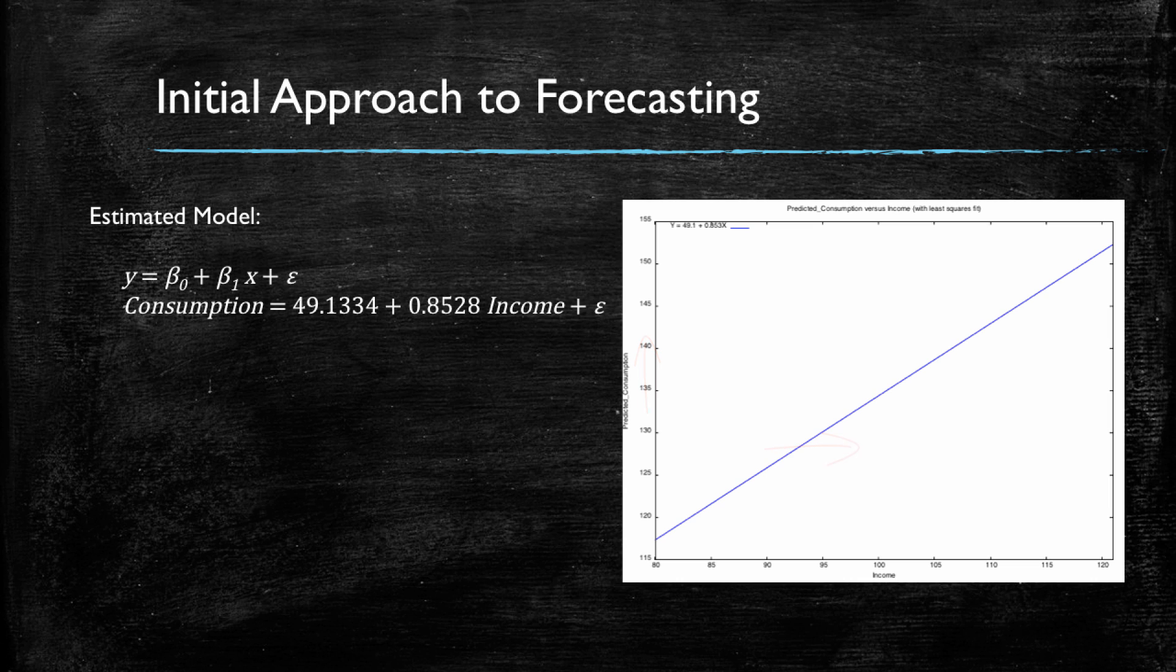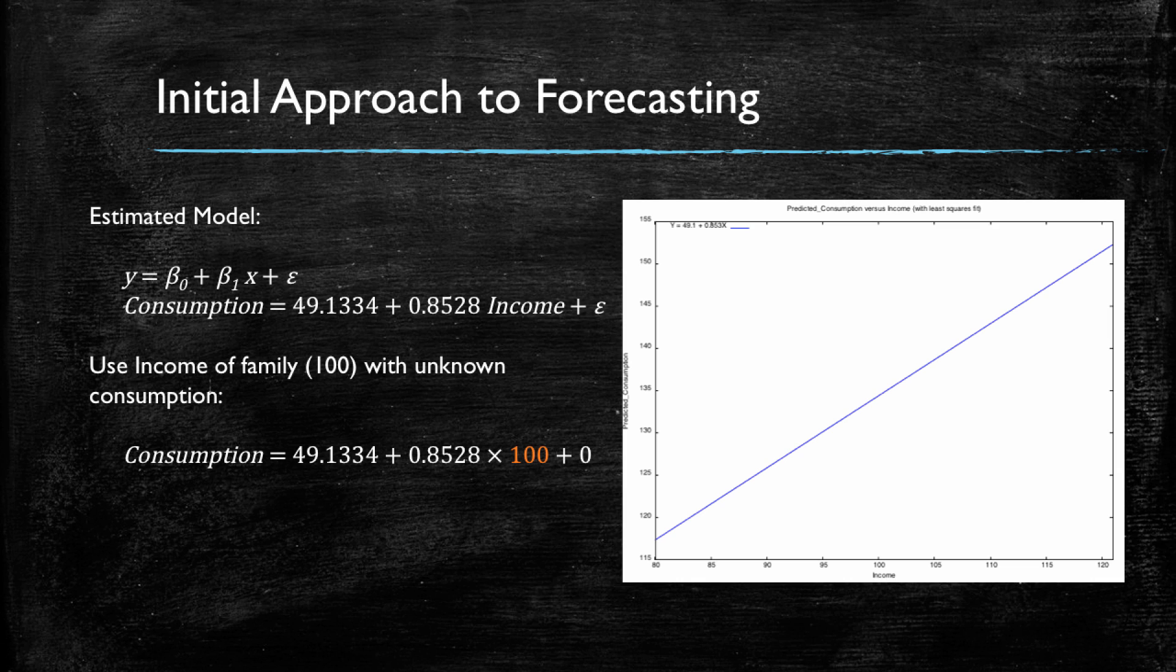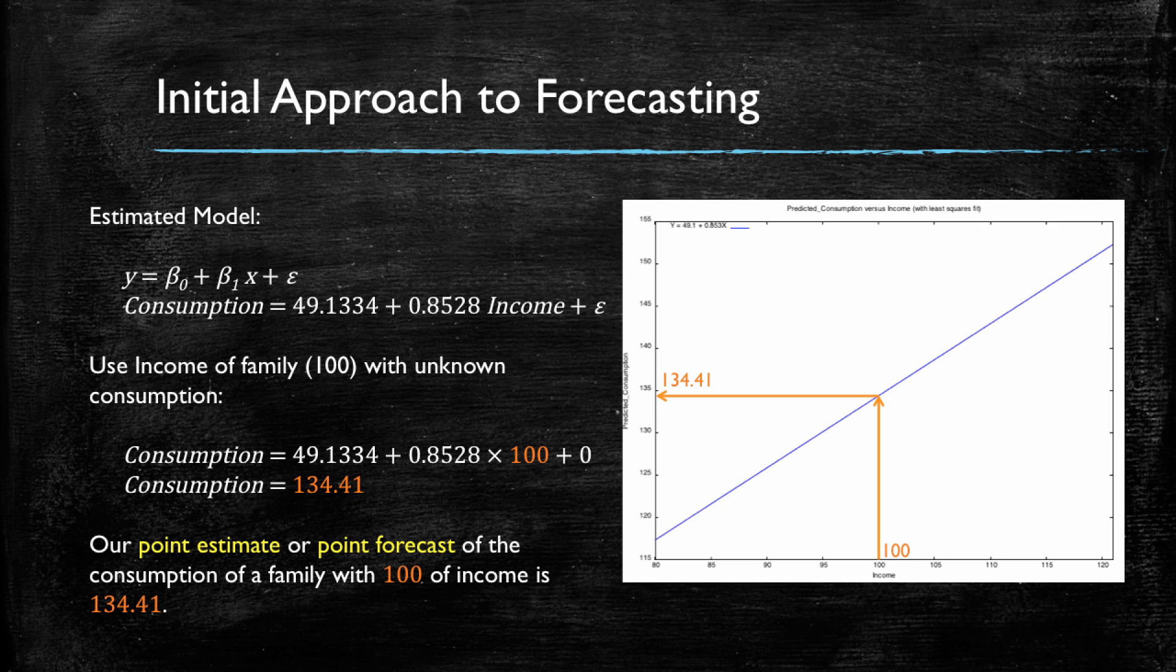So what we would like to do is simply take this 100, which corresponds to our x value, and plug it in to see what consumption we get. Graphically, what we are doing is simply locating 100 in the horizontal axis, checking where it intersects the estimated line, and finding that it intersects the line at a value of 134.41 of consumption. And this would be what we call our point estimate, or point forecast, of consumption for a family with $100 of income.